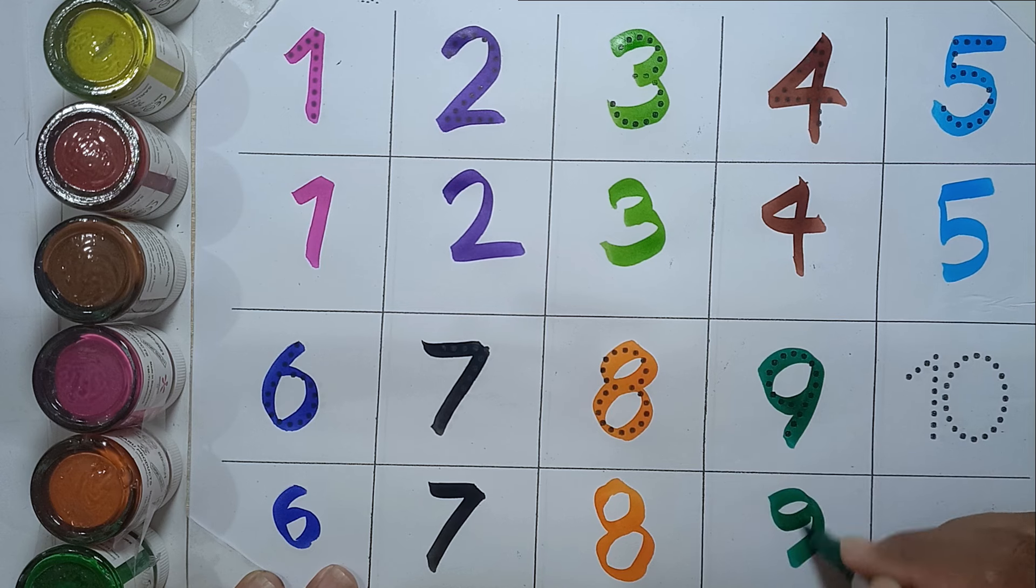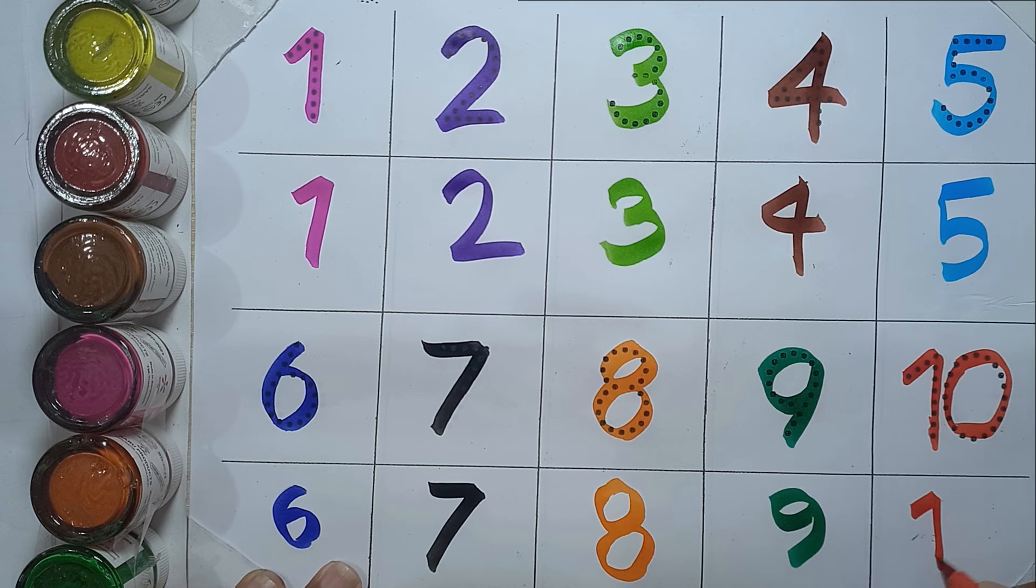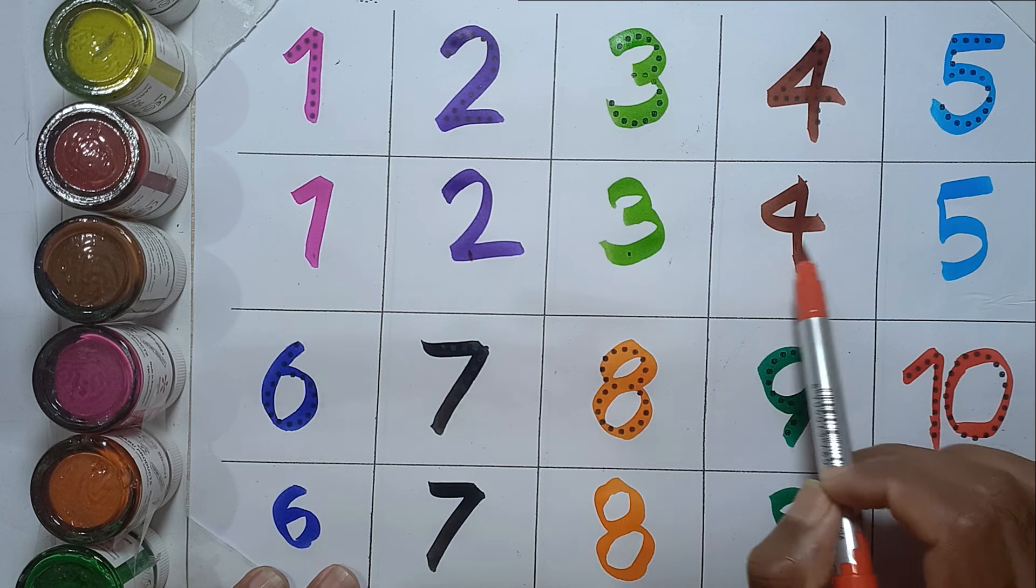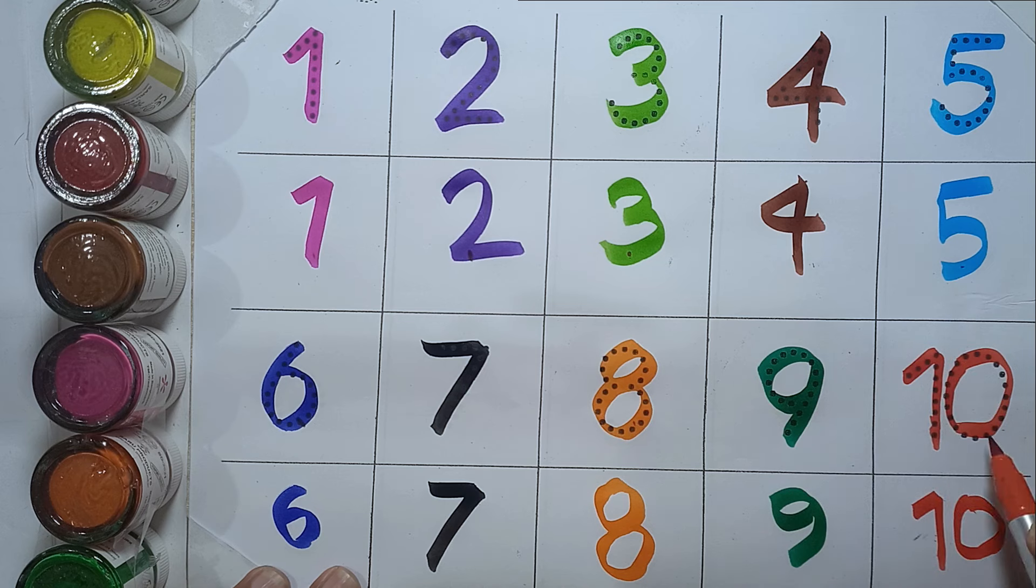Nine: N-I-N-E, nine. And ten: T-E-N, ten. Let's count again: one, two, three, four, five, six, seven, eight, nine, ten.